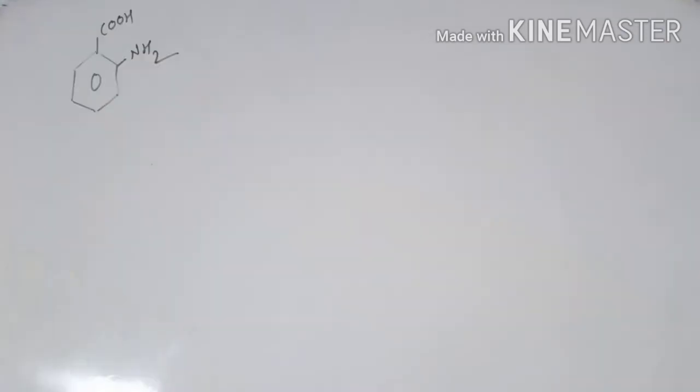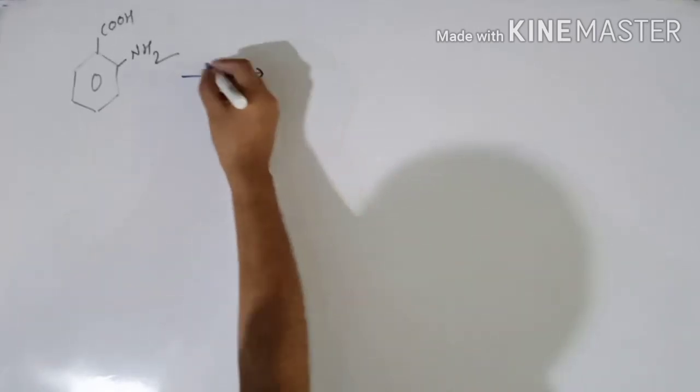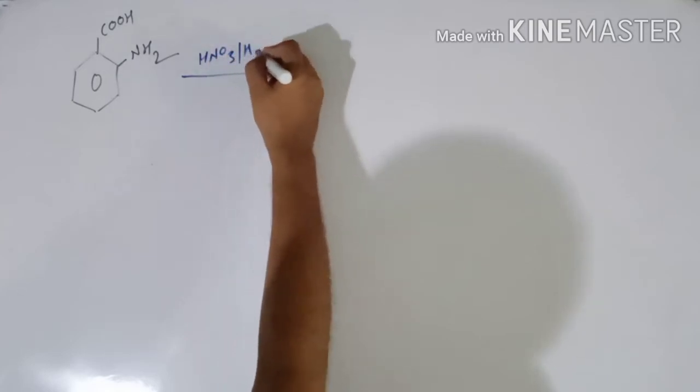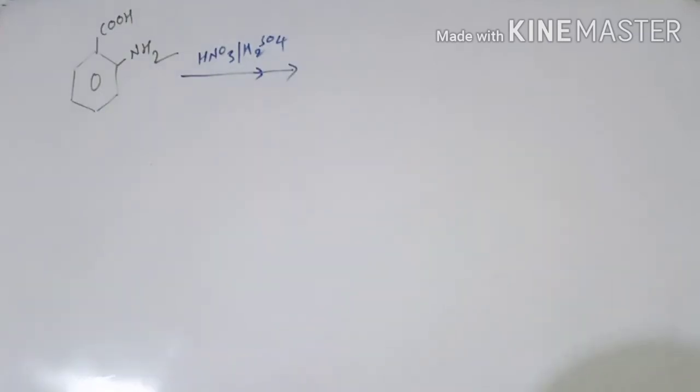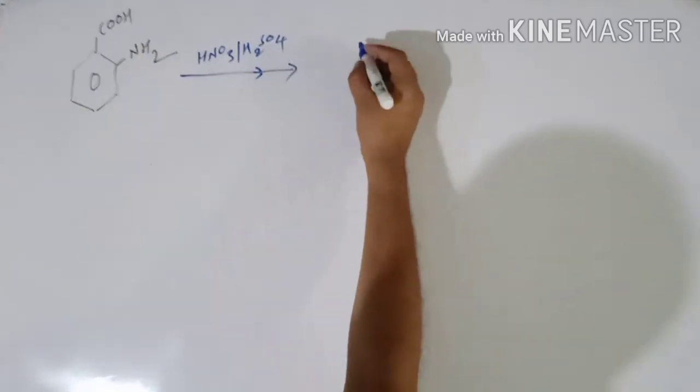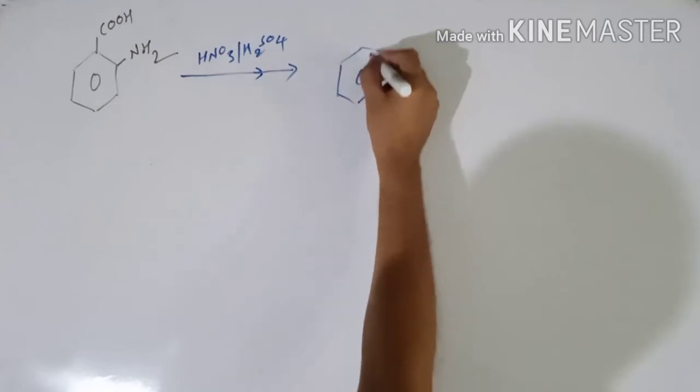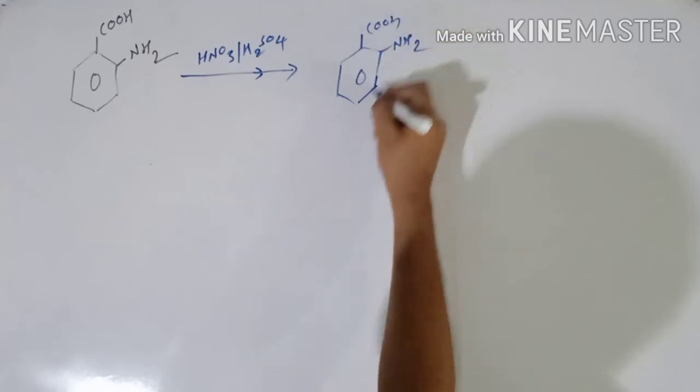First, we will do nitration in the presence of HNO3 and H2SO4. You know this reaction very well. When nitration is done, the nitro group is added to the para position. So this is your amine moiety and this is your nitro group attached to the para position.